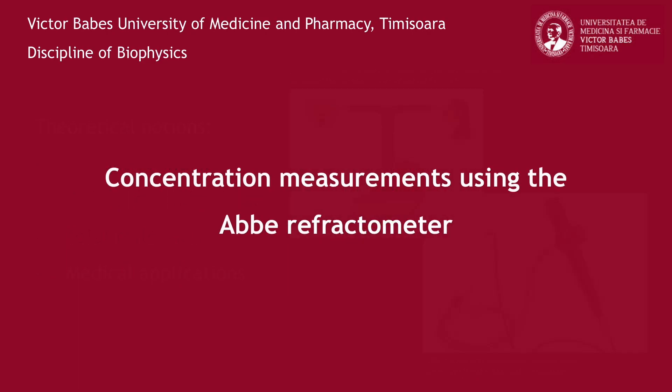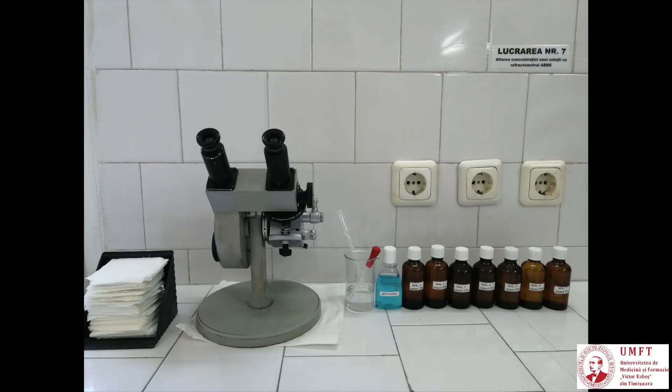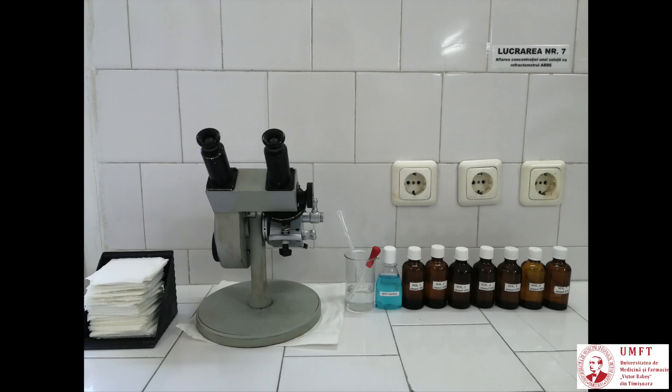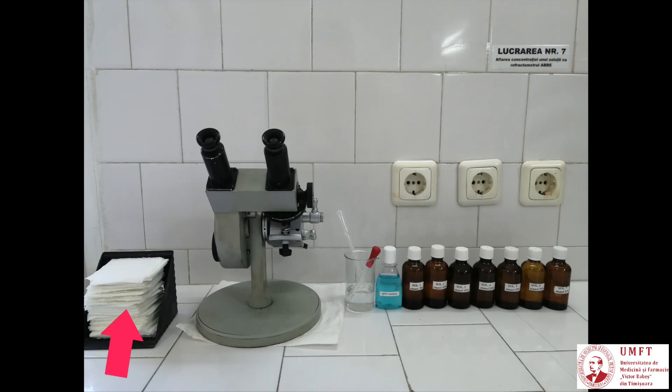In this practical work, you'll measure the refractive indices of some solutions using the Abbe refractometer. Then, using the measured values for solutions of known concentration, you will determine the unknown concentration of another solution. To this end, you will use an Abbe refractometer, seven aqueous ethanol solutions of different concentrations, distilled water, rubbing alcohol, a Berzelius glass, a pipette, and powder-free paper tissues.